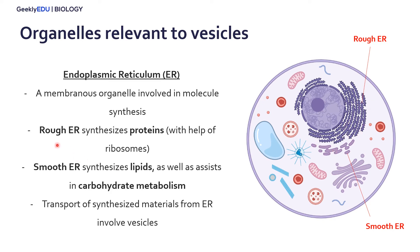The ER comes in two main types. We have the rough ER, which is called rough because we have all these little ribosomes on the membrane — it synthesizes proteins. Then we have the smooth ER, which is smooth because it doesn't have ribosomes on the membrane, and it's really important for synthesizing lipids as well as metabolizing carbohydrates.